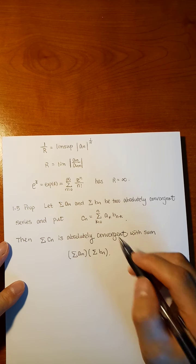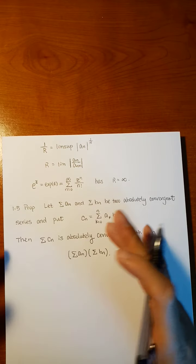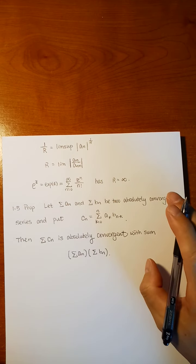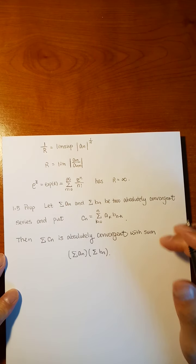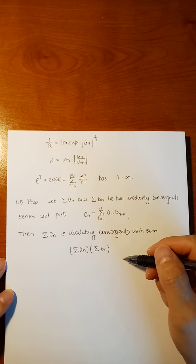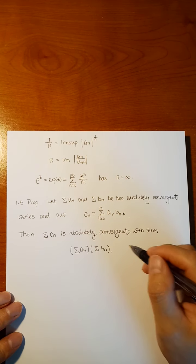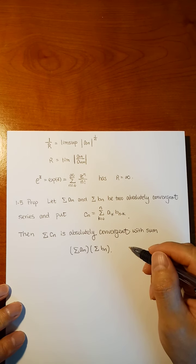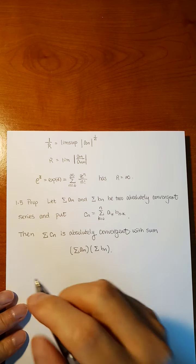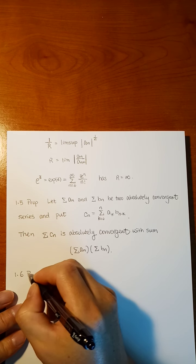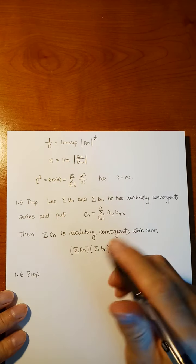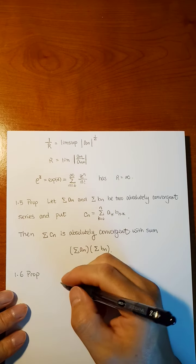If you expand it, you will see that's just pointwise multiplication. You can find the proof in whatever textbook about series. In this book there's no proof, so you can try it by yourself or look it up. With the help of this proposition, we have an application to power series.